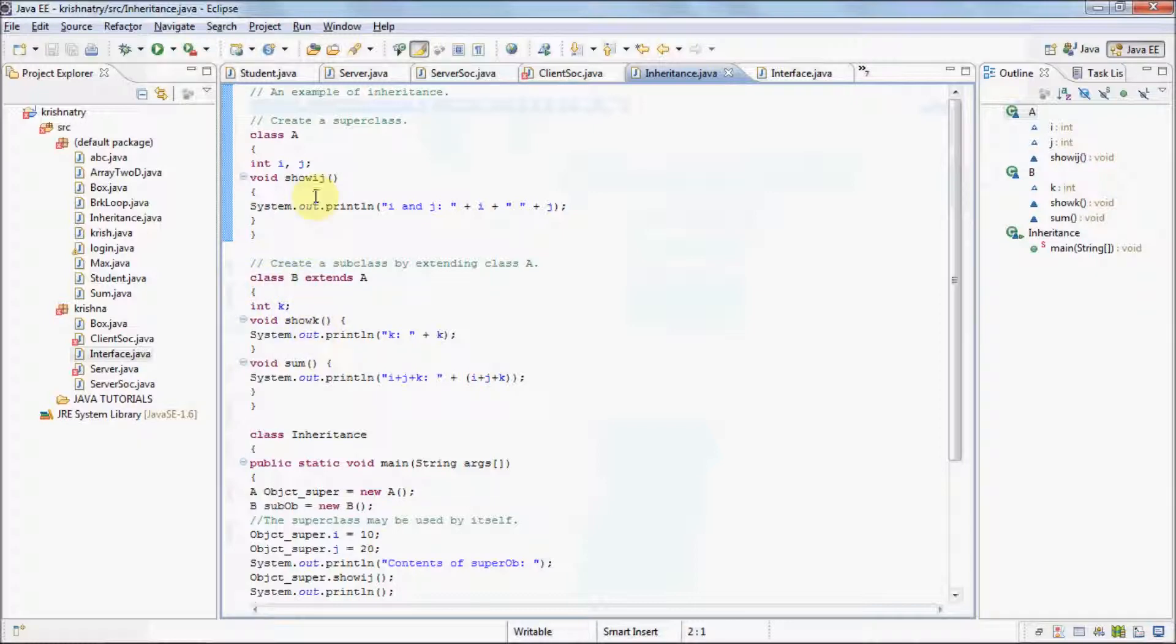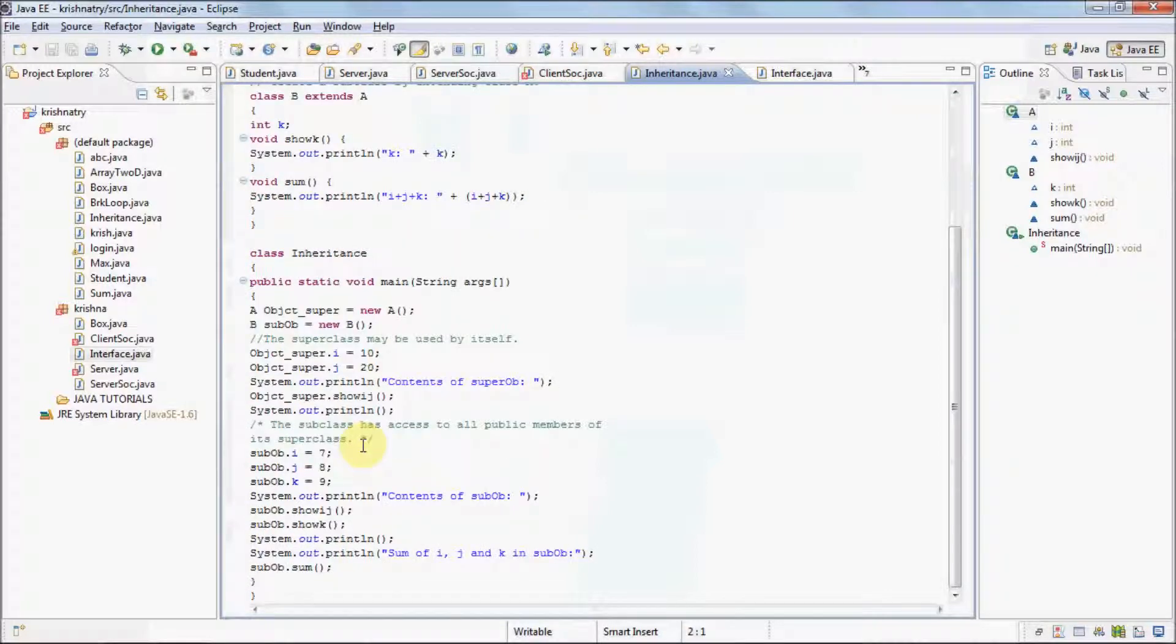Now let us make use of class A and class B in inheritance. In class inheritance we have two objects, one of class A and another of class B. One thing which we need to keep in mind is that we can access the member variables of a class or member methods of a class through dot operator. Here object super is an object of class A and i is a member variable of class A. We have assigned a value 10 to i of an object object super.